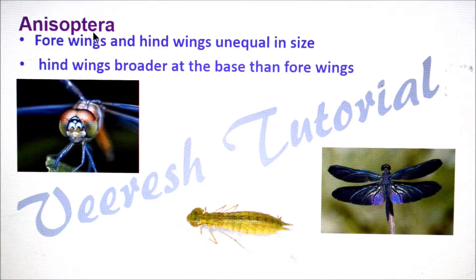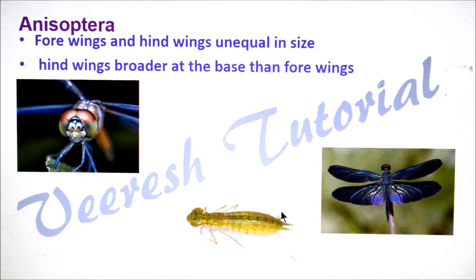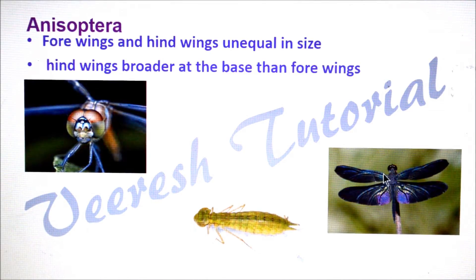Let's see Anisoptera — dragonflies come under this suborder. Here forewings and hindwings are unequal in size. The base of the hindwing is broader than the base of the forewing. Compound eyes are holoptic and niads respire through rectal gills. Dragonflies are strong flyers and they spread wings laterally at rest.